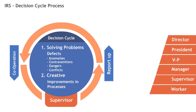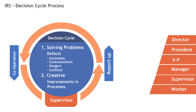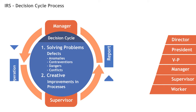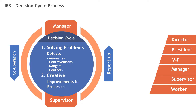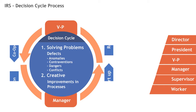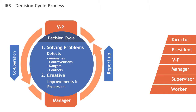Are there times when the problem is too big for the supervisor — beyond the supervisor's resources, authority, and so on? Then the supervisor must move it up to the next level, to the manager. The manager has more authority, resources, and experience. The manager then works with the supervisor and perhaps the crew to solve the problem. Are there times when the problem is too big for the manager? Move it up to the next level, and so forth. You can see how problems move up, and sometimes problems and solutions move sideways.